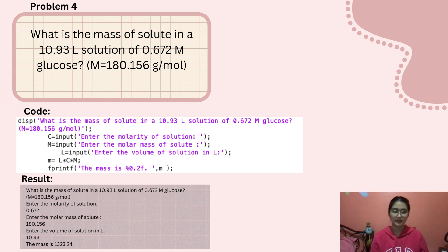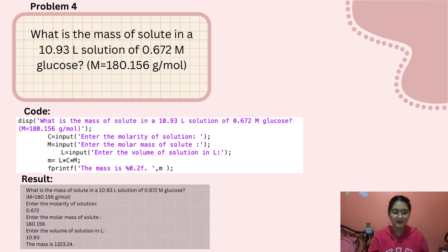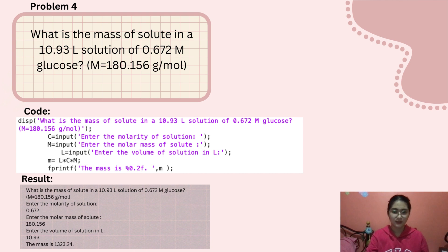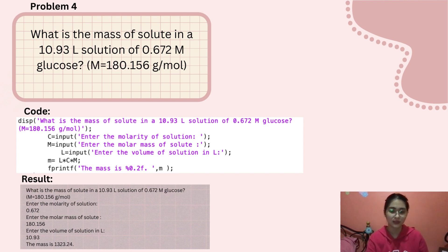The last problem for Analytical Chemistry is: what is the mass of solute in a 10.93 liters solution of 0.672 M glucose, where M is 180.156 grams per mol? You enter the molarity of solution, which is 0.672; the molar mass of solute, which is 180.156; and the volume of solution in liters, which is 10.93. The mass would be 1323.24.